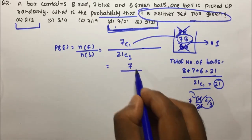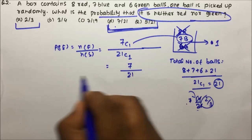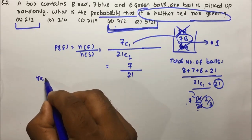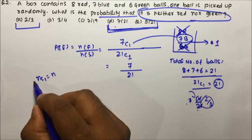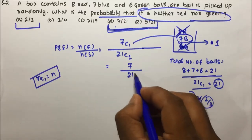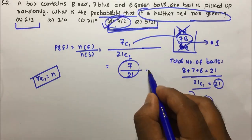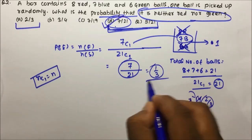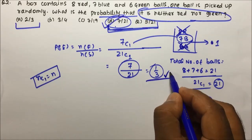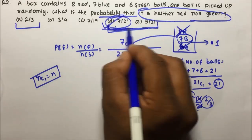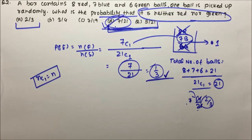7C1 will be 7, and 21C1 will be also 21 because nC1 is nothing but equal to n. So you can see option D, 7 by 21. So option D will be the correct answer. If 1 by 3 is given, then you can tick that answer also, but in this case 7 by 21 is the right answer.